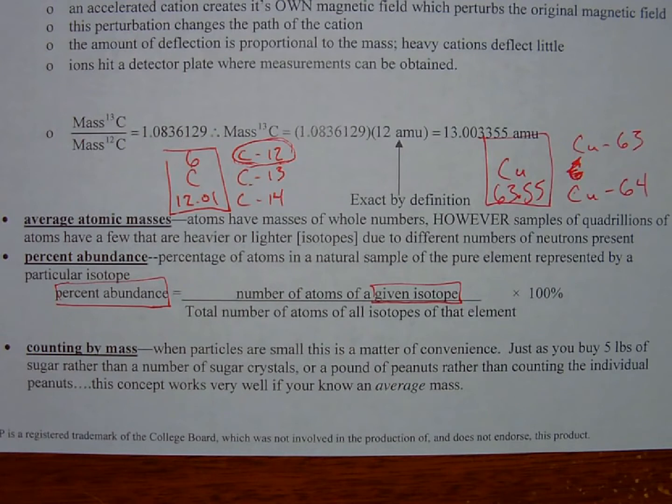when you go to the store and you buy sugar, you just buy a five-pound bag rather than asking for 647 million sugar crystals. You buy a pound of peanuts rather than asking for 350 peanuts. And so that's what we're doing with atoms. This system works wonderfully well if you know the average atomic mass. If you know how much the average peanut weighs,